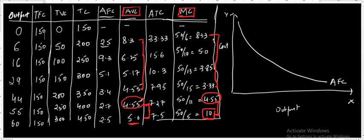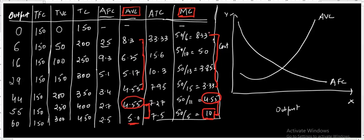Now what happens to the average variable cost? The average variable cost first falls and then rises. So the average variable cost curve first falls and then rises.